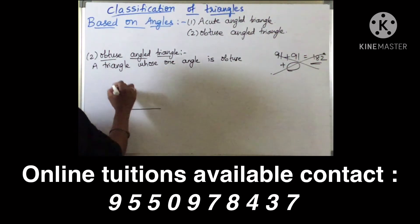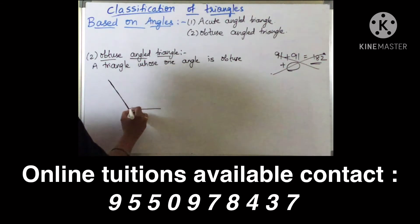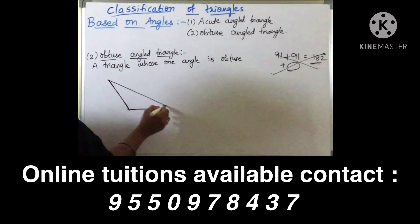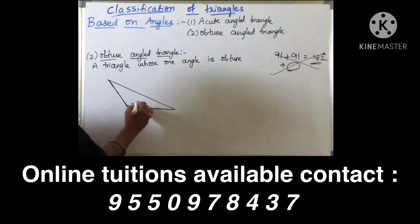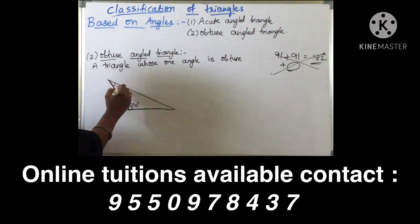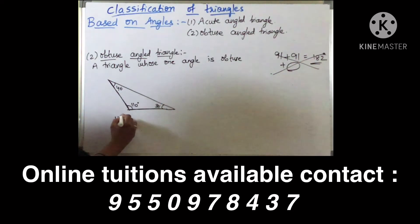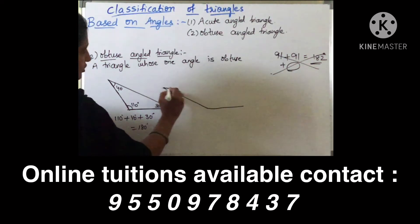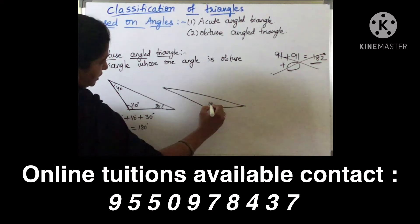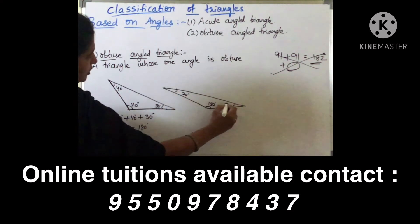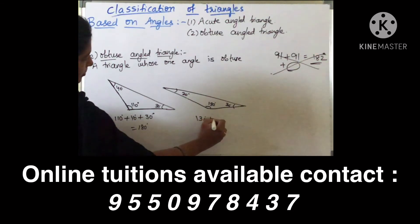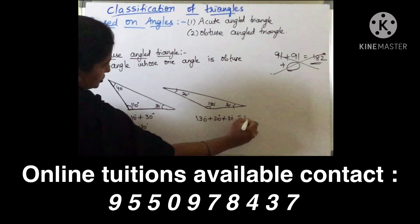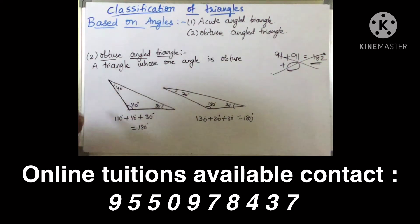If one angle is obtuse, then we call it an obtuse angled triangle. For example, a triangle with angles 110, 40, and 30 — because 110 plus 40 plus 30 equals 180, and 110 is the obtuse angle. Another example: 130, 20, and 30 — 130 plus 20 plus 30 equals 180. So if one angle is obtuse, we call it an obtuse angled triangle.